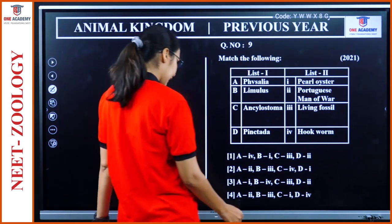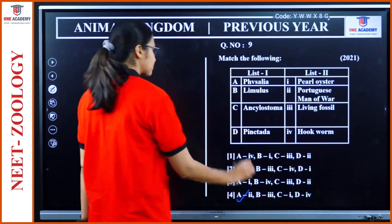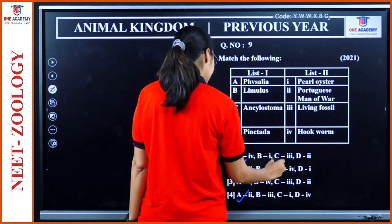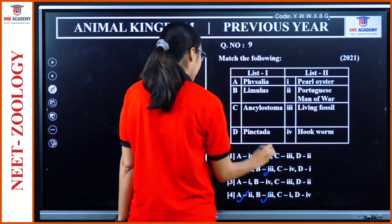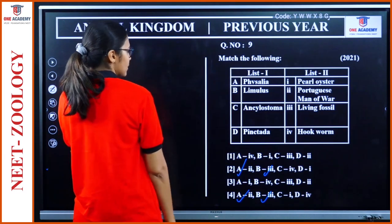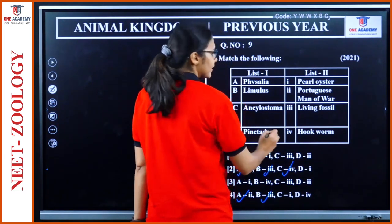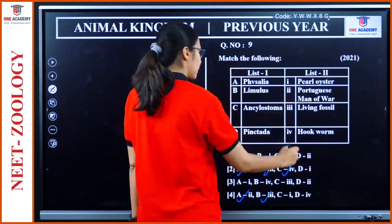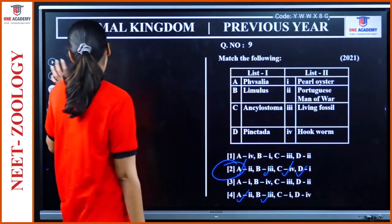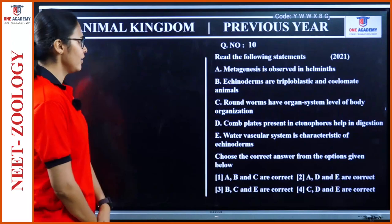Question 9: Match the following. Physalia — Portuguese man-of-war — A2. Limulus — living fossil — B3. Ancylostoma — hookworm — C4. Pinctada — pearl oyster — D1. Option 2 is the answer.